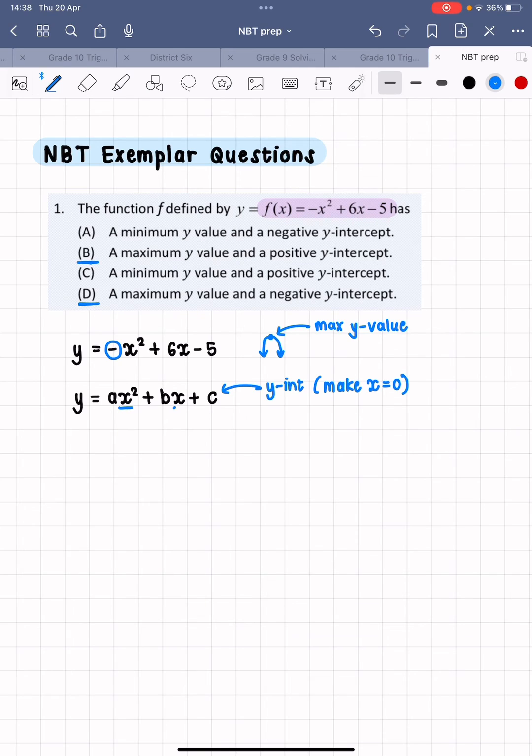And if this is 0, and this is also 0, these terms are going to fall away completely. Those terms are both going to be equal to 0. I am going to be left with c only. So the y intercept is going to be c.